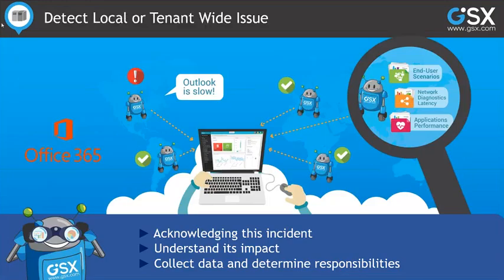The first topic is: how do you detect a local or a tenant-wide issue? Most of you have already experienced end user complaints about performance of one or multiple Office 365 services in one or multiple locations. The first question after a complaint is: is it really an issue? People complain all the time, not necessarily for a real reason. You need to acknowledge the reality of the incident, understand its impact — is it just one location, or is it happening everywhere? — and then analyze the issue: is it your responsibility, or is it a Microsoft service issue? Let's see how you can face these challenges with the GSX robot user.